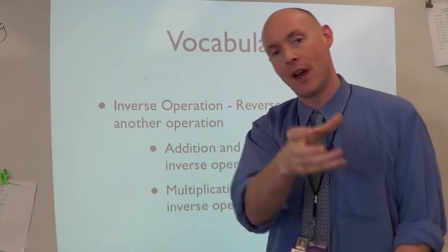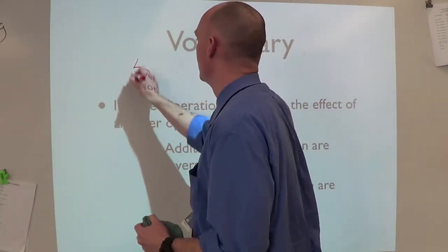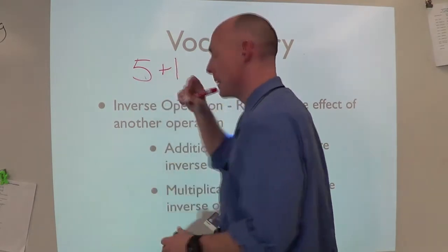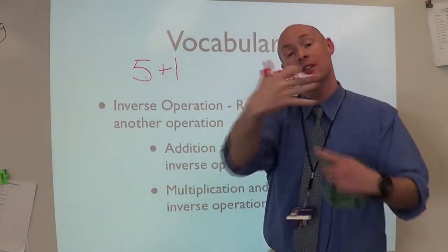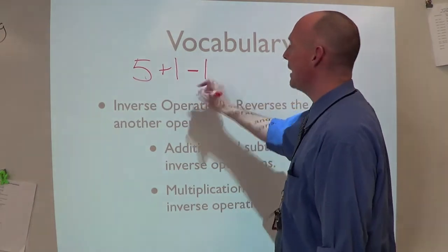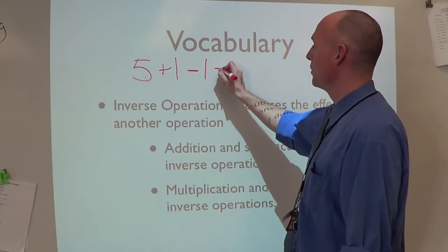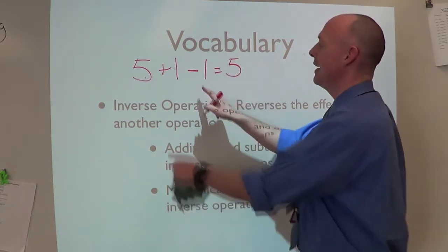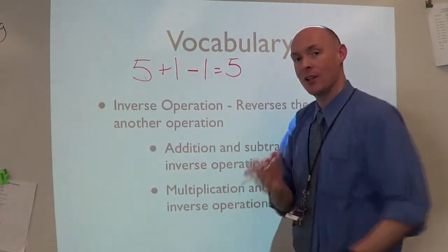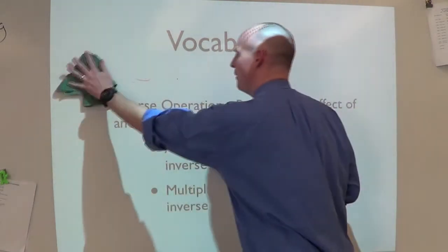Here I have a number like 5. 5 plus 1 - if I add 1 to 5 I get 6. The inverse would be to minus 1. 5 plus 1 is 6, minus 1 we're right back to 5. Addition and subtraction are inverses, meaning they undo each other.